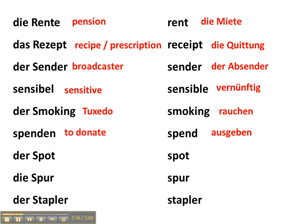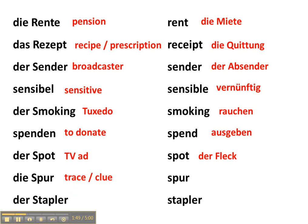Der Spot, which is normally associated with a TV ad in German. But you also have in English the word spot, which is der Fleck. Die Spur, which in German has the meaning of trace or clue, or sometimes even a lane, like a car lane. And then you have the English word spur, which in German is die Sporen.